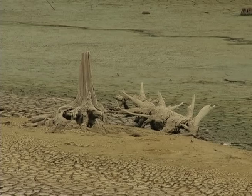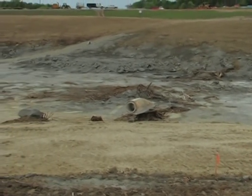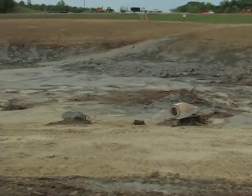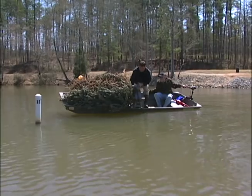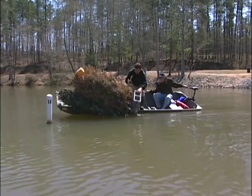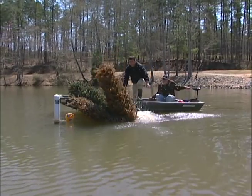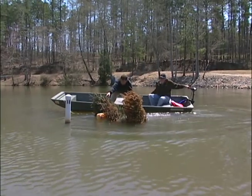Fallen trees, stumps, and rocks can be pushed into piles and anchored to the bottom of the pond. If water is already in the pond, trees can be sunk in groups using rope and concrete blocks. Another technique often used is to place limbs and small trees in a bucket and fill it with concrete.